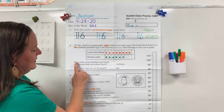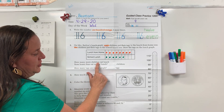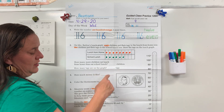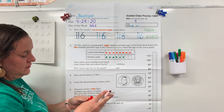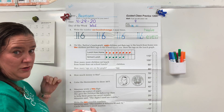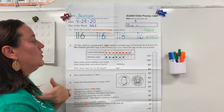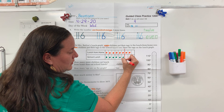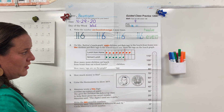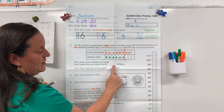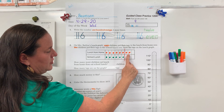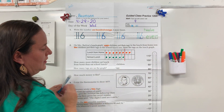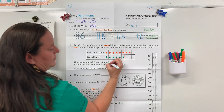How many more children eat lunch from home than eat school lunch? We need our red pencil. Think about where you draw your line — we draw the line where they stop being equal or even. Write the number word that tells me how many more children chose lunch from home. You should have written 2.